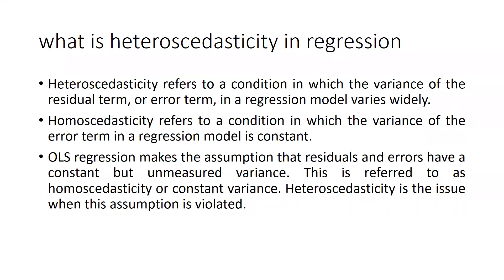Heteroscedasticity is the condition in which the variance of the residual term or error term in a regression model varies widely — if the error term variance is very high and not constant, there is a problem of heteroscedasticity. Homoscedasticity refers to a condition in which the variance of the error term in a regression model is constant, which is acceptable.